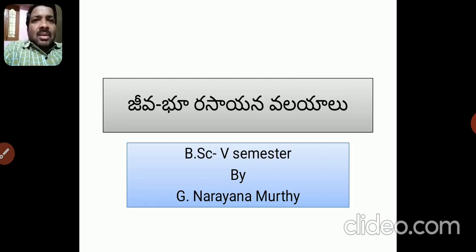Carbon and nitrogen are gaseous cycles, because they are present in the form of gases. The main sources of carbon and nitrogen are in the form of gases, so these two are called gaseous cycles.